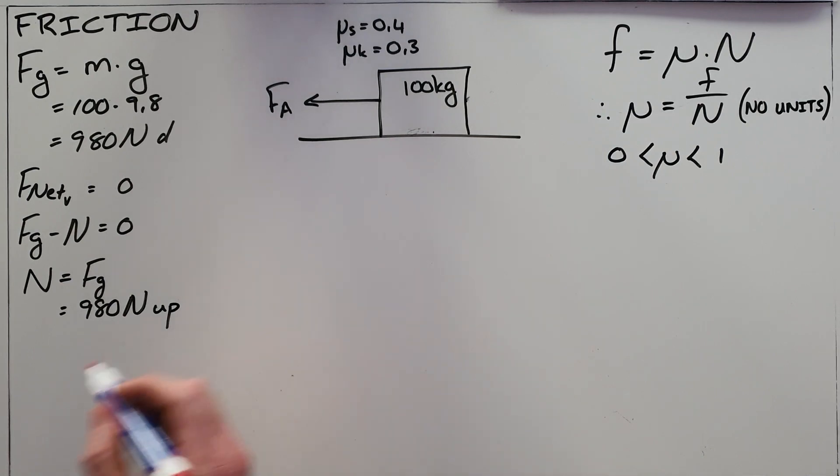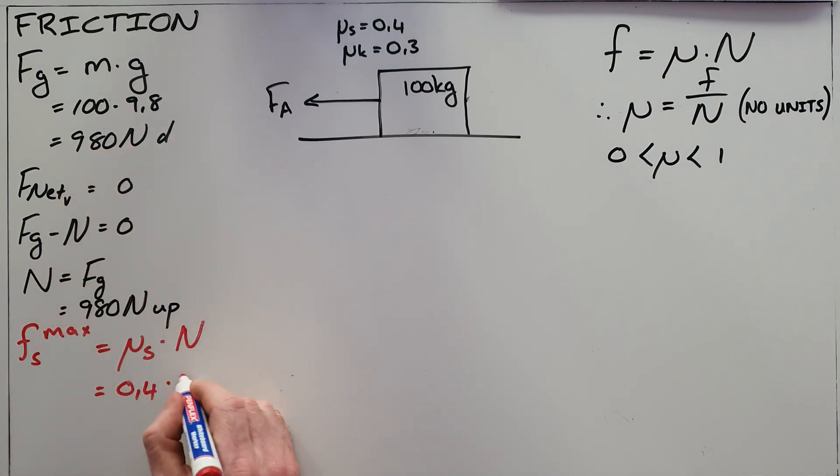Static friction maximum, Fs max, can be calculated by taking the product of the static friction coefficient and the normal force. The coefficient of static friction has been given as 0.4, the normal force calculated as 980, which means that our static friction maximum is 392 newtons.